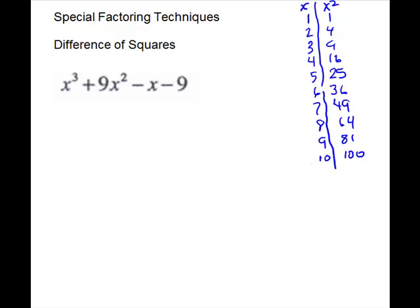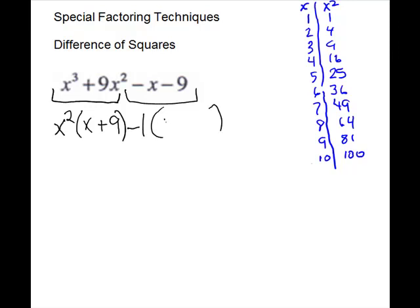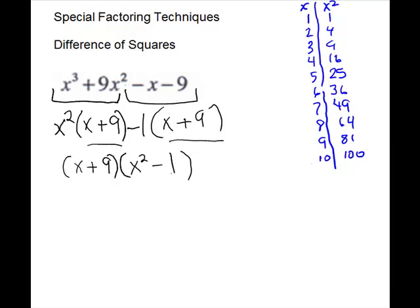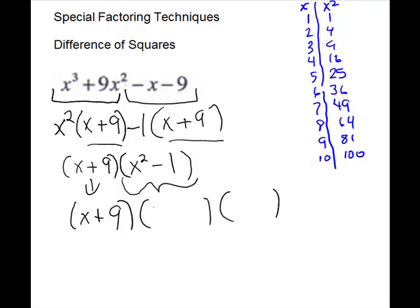We have one more problem that is 4 terms, so we're going to try grouping. In our first group, we have a GCF of x², and that leaves us x plus 9. In the second set of parentheses, we will take out a negative 1 — we start with negative, that's your clue — and that will also leave x plus 9. You can double check: negative x, negative 9 — what we did is correct. You have a common binomial, so we'll take it out: x plus 9. To get back to our line above, we're missing x² minus 1. But x² minus 1 gives us a difference of squares, so it will go down from x² to x to the first. Plus and minus — square root of 1 is 1.